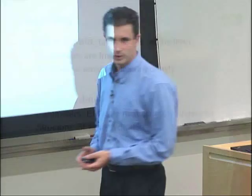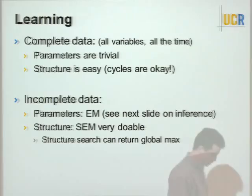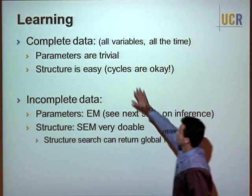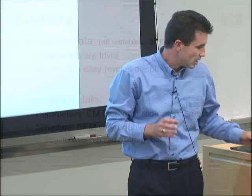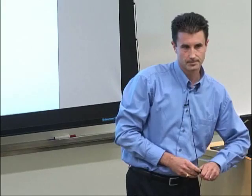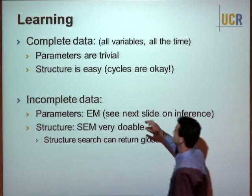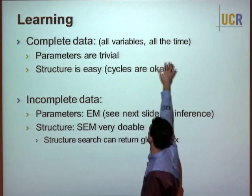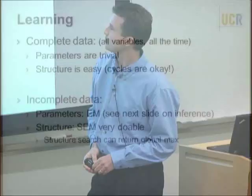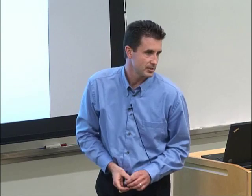For parameter learning: given the structure, estimating the local rate matrices Q is trivial — you have a bunch of multinomial and exponential distributions, and just read off parameters from the sufficient statistics. For incomplete data, expectation maximization works: estimate the expected sufficient statistics. Structure learning is also simpler than in Bayesian networks because cycles are allowed. The constraint against cycles is what makes Bayesian network structure learning hard; bounding the in-degree gives a polynomial-time algorithm that finds the global maximum.